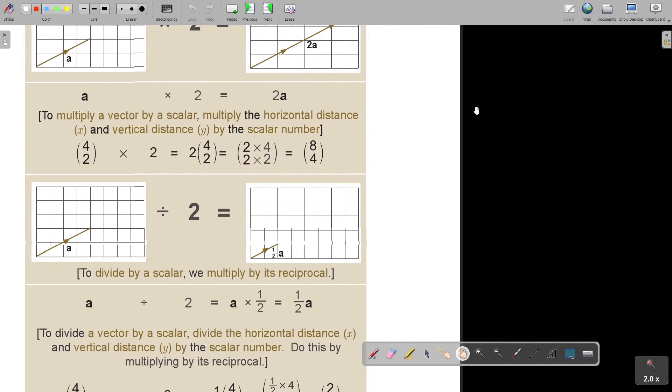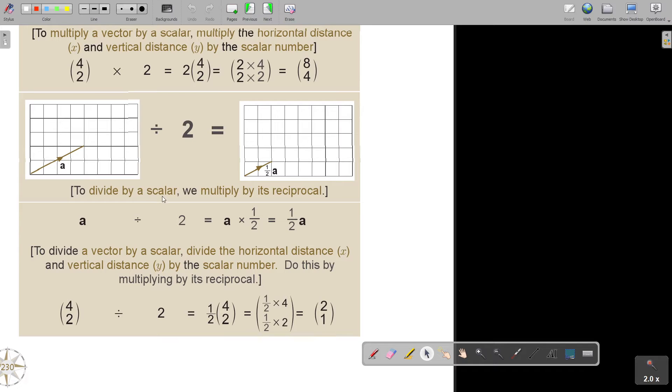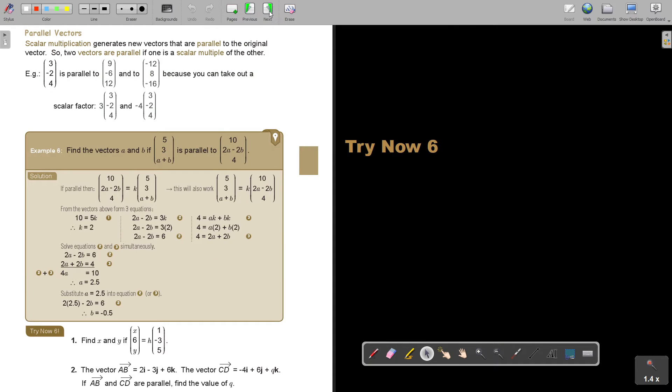The same with divide. To divide a scalar, we multiply by its reciprocal. So it's going to become shorter. So it's multiply a half, so it's half shorter. To divide the vector by a scalar, divide the horizontal distance X and the vertical distance Y by the scalar number. Do this by multiplying its reciprocal. The best is first to make it a half, and then to multiply and multiply, otherwise you just say 4 divided 2, 2 divided 2, and it also becomes 2 and 20.